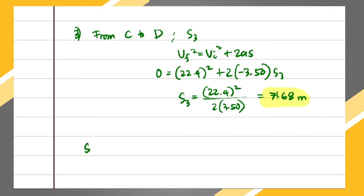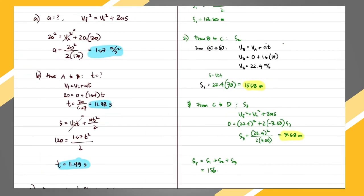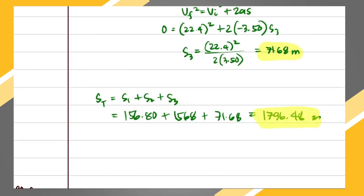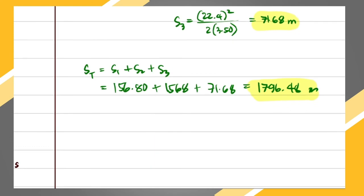The total distance sT = s1 + s2 + s3 = 156.80 + 1568 + 71.68 = 1796.48 meters. That is our final answer. In the next meeting we will be discussing vertical motions, or free fall.